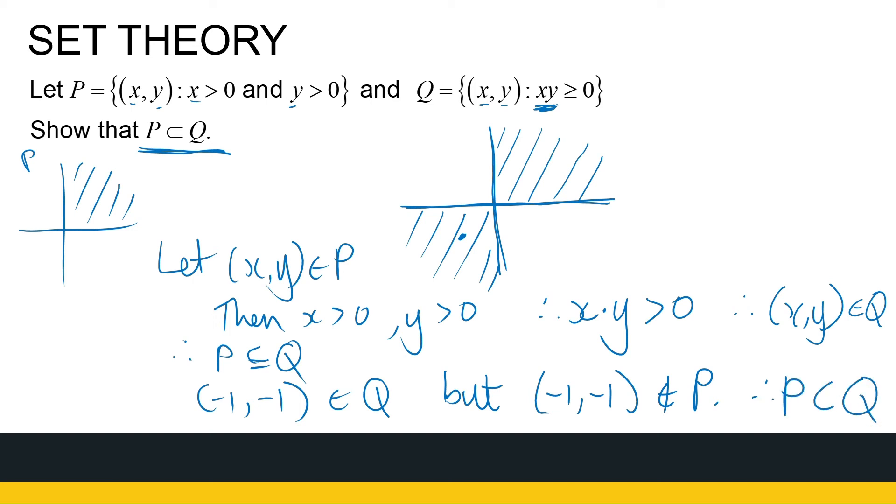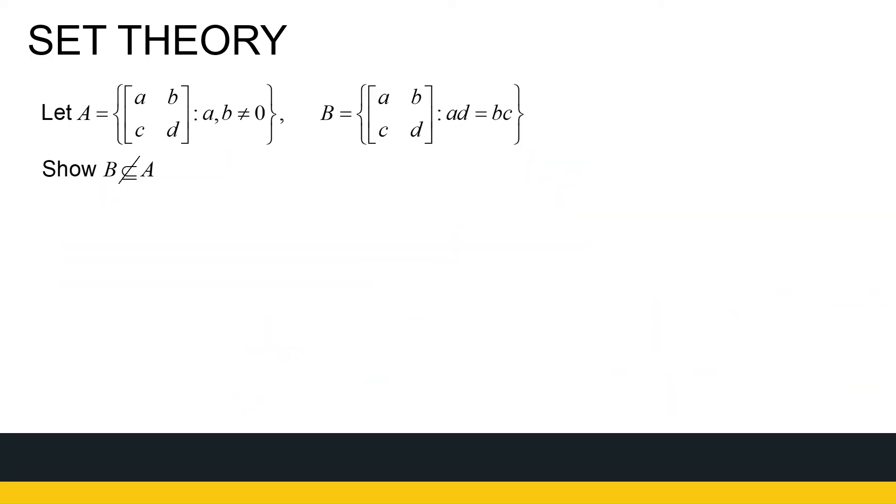So, everything we've done with sets, we can look at in terms of sets of numbers. We can look at it in terms of sets of ordered pairs, or polynomials, or matrices, or any other objects. All right. So, the last one.